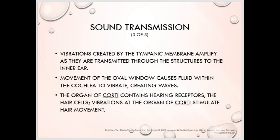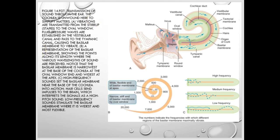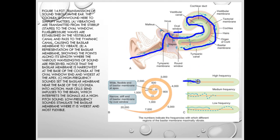The oval window causes the fluid within the organ of Corti to vibrate, sending waves that stimulate hearing receptors. Different locations along the organ of Corti — which spirals like a snail shell — stimulate different receptors for different pitches. High frequency is stimulated just a little ways in, while low frequency stimulates deeper into that snail shell. Don't worry about specific numbers and frequencies — just know those general concepts.